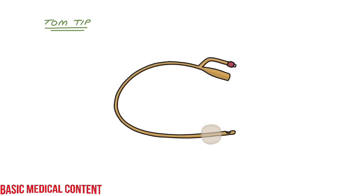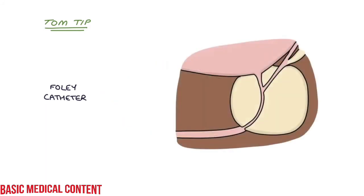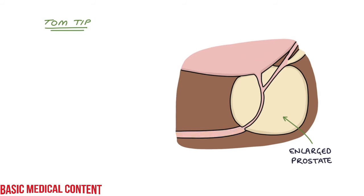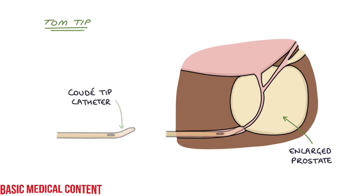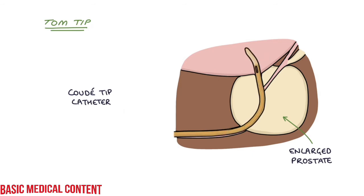The catheter you'll see most often on the wards and in your OSCEs is the Foley catheter, or two-way catheter. You might find it difficult to insert a Foley catheter into a man with acute urinary retention due to an enlarged prostate, because Foley catheters are straight and quite soft. If the Foley catheter fails, it's worth giving a coude tip catheter a try, as the slightly rigid curved tip can make bypassing the obstruction much easier. Inserting a catheter for somebody in acute urinary retention is one of the most rewarding jobs as a junior doctor, as you can almost immediately relieve the patient's pain and distress.